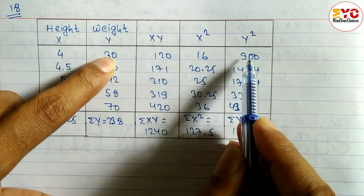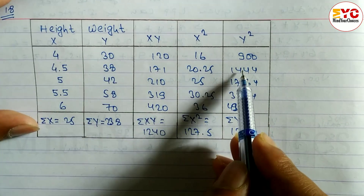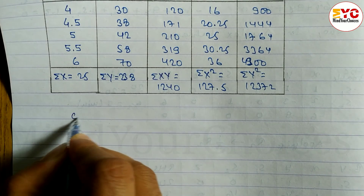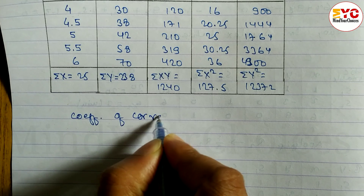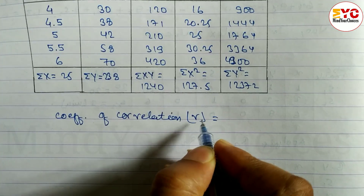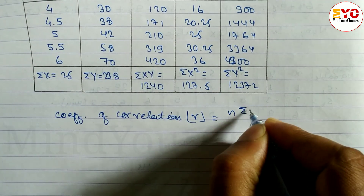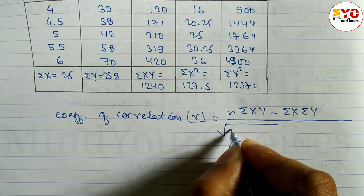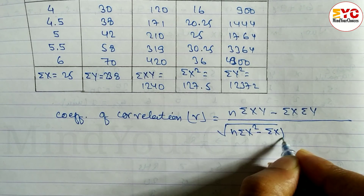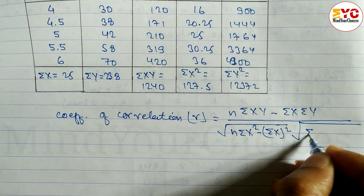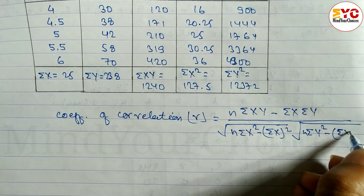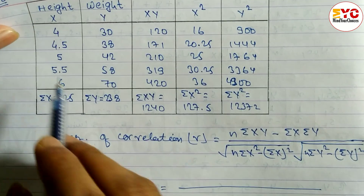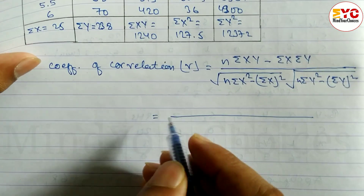After adding up all columns, we get the total Σxy equal to 12372. Now we have to use the formula for the coefficient of correlation. The formula is: r = [n·Σxy − Σx·Σy] divided by the square root of [n·Σx² − (Σx)²] times [n·Σy² − (Σy)²].